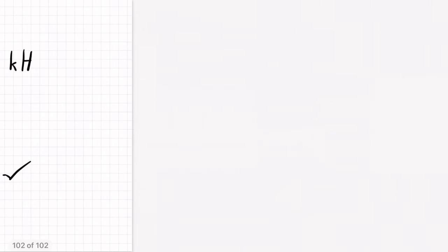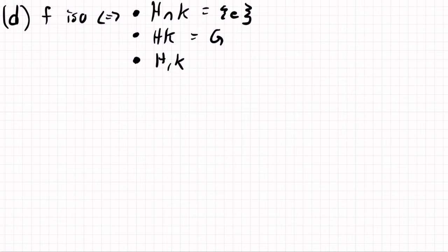And then finally, we're putting it all together, d, and we wanted to show that f was an isomorphism, and we had that was equivalent to h inverse hk being the identity. We had HK being G. And we had this fact that both h and k are normal subgroups. So G. So I'll say, like, this direction is the easy direction, because if f is an isomorphism, you know,